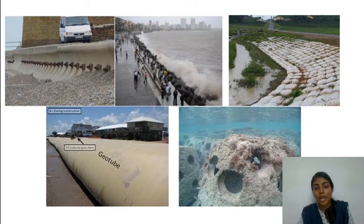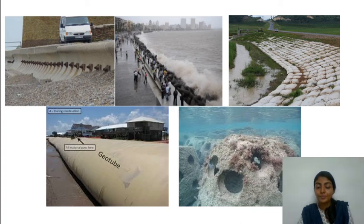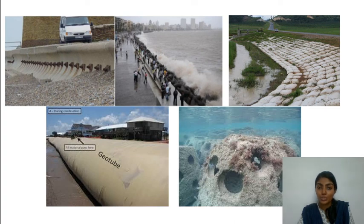Soft options like dune rehabilitation, dune vegetation, and beach face dewatering are preferred. Along with these, we have proactive methods which also address the root cause of sea erosion; these are eco-friendly as well as construction-friendly. Such mitigation measures are taken in order to reduce the damage and adverse effects of sea erosion.